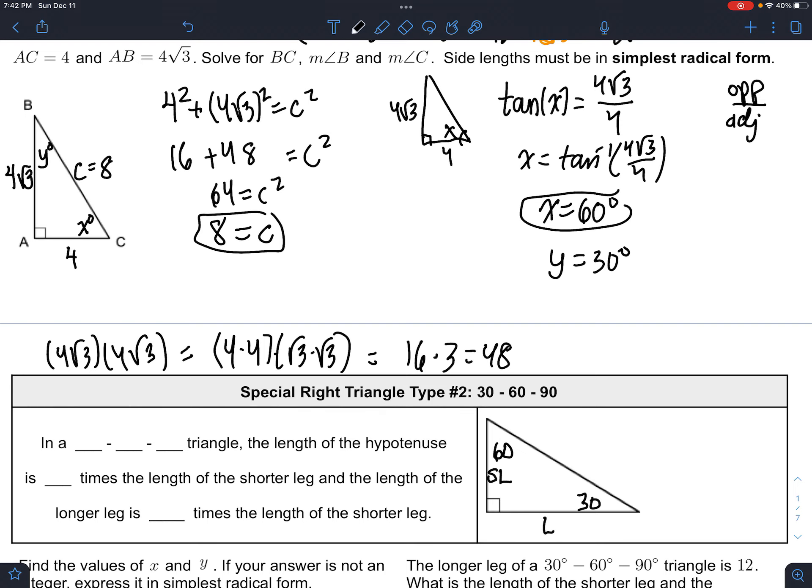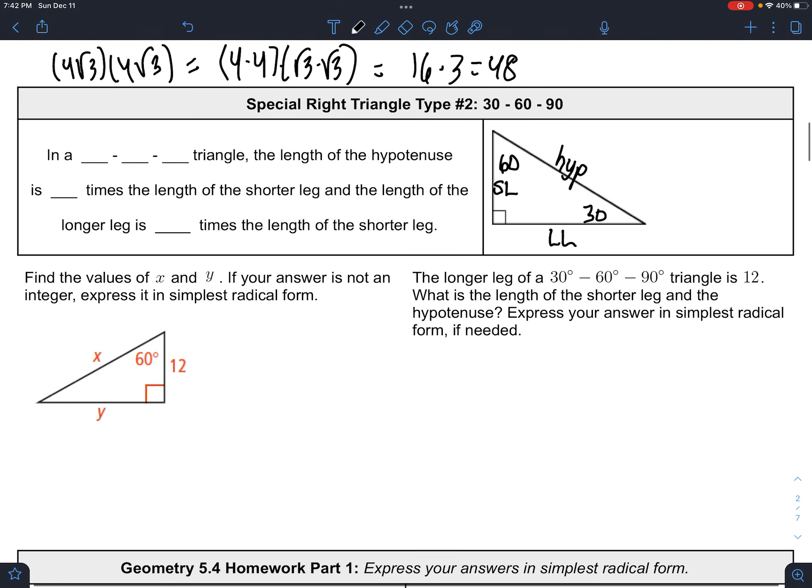And this is the short leg, and this is the long leg, and this is the hypotenuse. So the rules are, the length of the hypotenuse is 2 times the length of the short leg. I like to actually write it like this: short leg times 2 is the hypotenuse, and short leg times square root 3 is the long leg. That's what this says, right there.